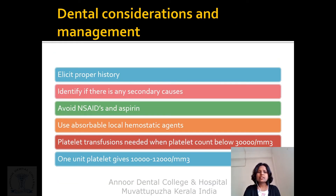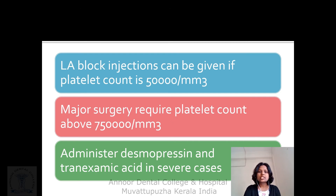Dental considerations in purpura: elicit proper history and identify any secondary causes. Avoid NSAIDs and aspirin. Use absorbable local hemostatic agents. Platelet transfusion is needed when platelet count is below 30,000 per cubic millimeter — one unit of platelets can raise the count by 10,000 to 12,000 per cubic millimeter. A limb block injection can be given if platelet count is 50,000 per cubic millimeter. Major surgery requires platelet count above 75,000 per cubic millimeter. Administer desmopressin and tranexamic acid as needed.